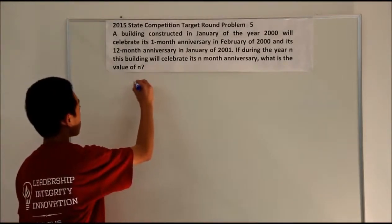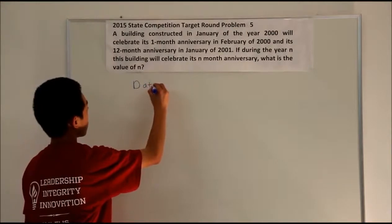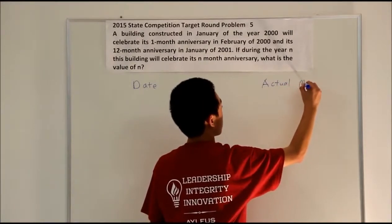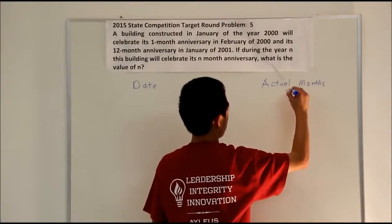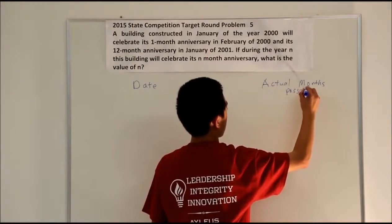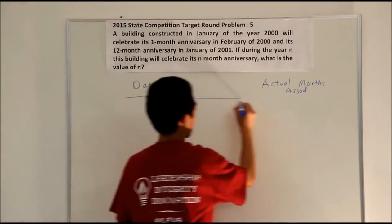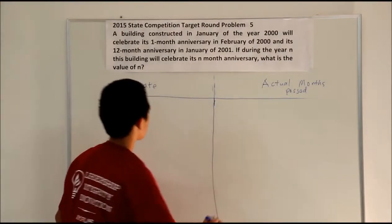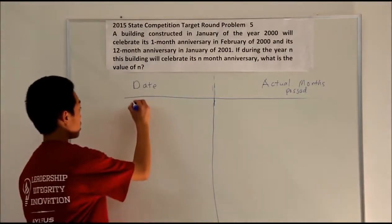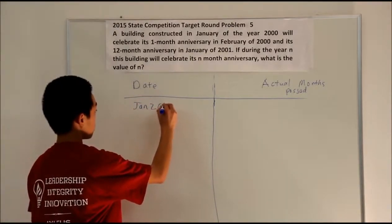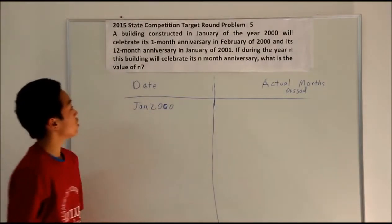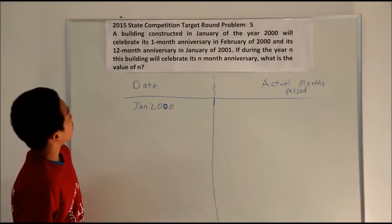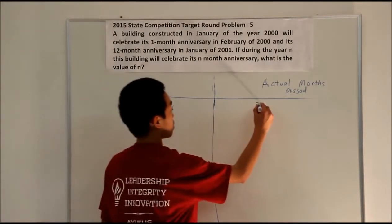Let's just give some examples. For January of 2000, there have been no months past because the first anniversary was in January of the year 2000, so the count is zero.